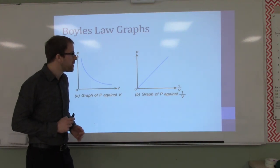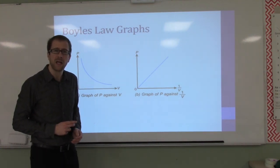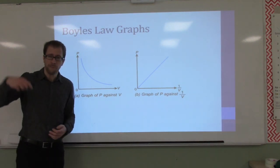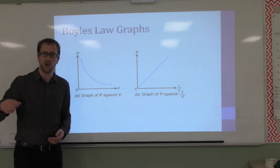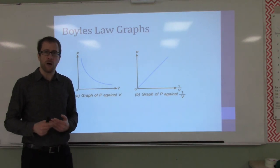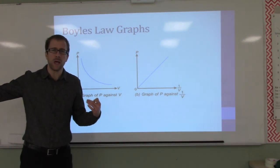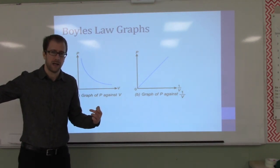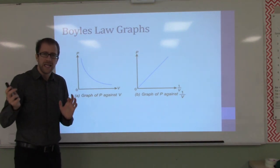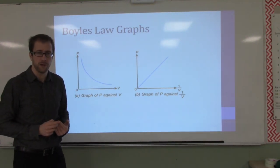What happens if we cut the pressure by a factor of four? Our pressure is now one-fourth of what it was. What happens to our volume? Our volume is now four times greater as a result. So they are inversely proportional to one another.